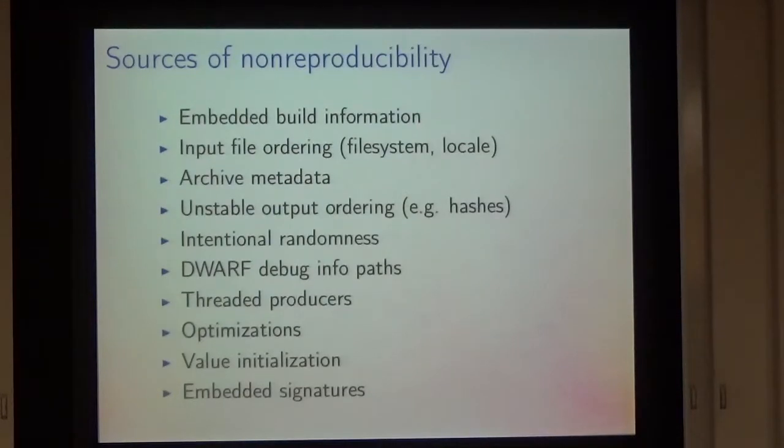Input file ordering - if we have a star dot C or star dot O blob expression in our build system and the file system returns files in an undeterministic order, you're building on a different file system that returns them in a different order, that can lead to unreproducible output. Or the locale - how you sort strings if one user compiles in one language and another user compiles in a different language that has different sorting rules, then the input will come in a different order and be output non-reproducibly.